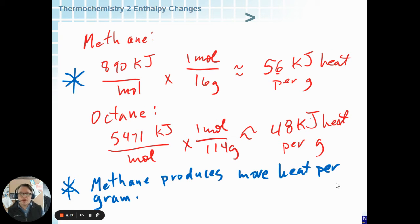Here's how we would solve that. 890 kilojoules per mole for methane times one mole per 16 grams, that's the molar mass, gives you 56 kilojoules of heat per gram. Octane is 5,471 kilojoules per mole. But we would have to divide that by 114 grams per mole, and we get 48 kilojoules of heat per gram.